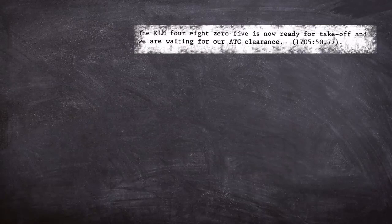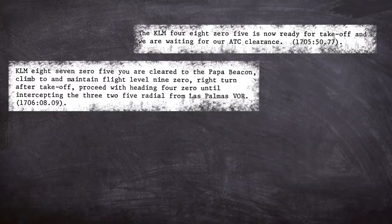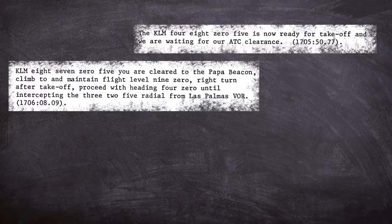During the vital clearance request stage, once the KLM had lined up, a misunderstanding led the crew to believe they had clearance. The statement by the first officer, we are ready for take off and we are awaiting ATC clearance, was responded to from the tower with, you are clear to Papa Alpha Beacon, which was the ATC clearance.